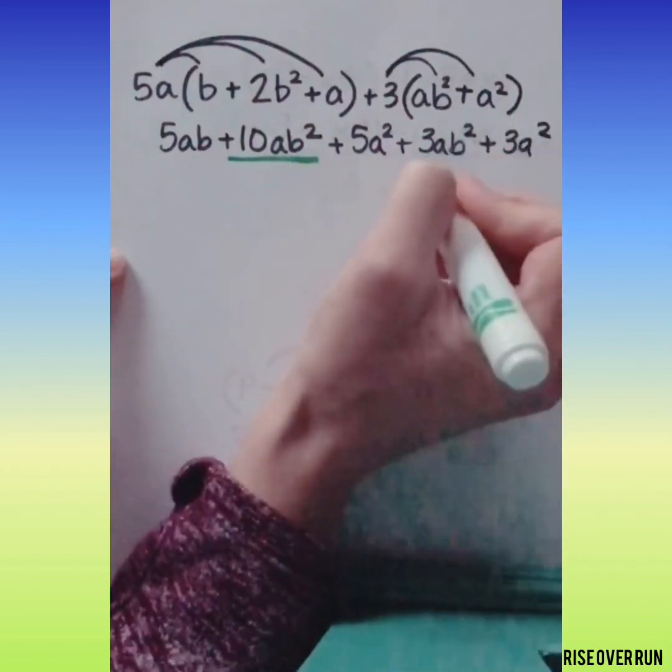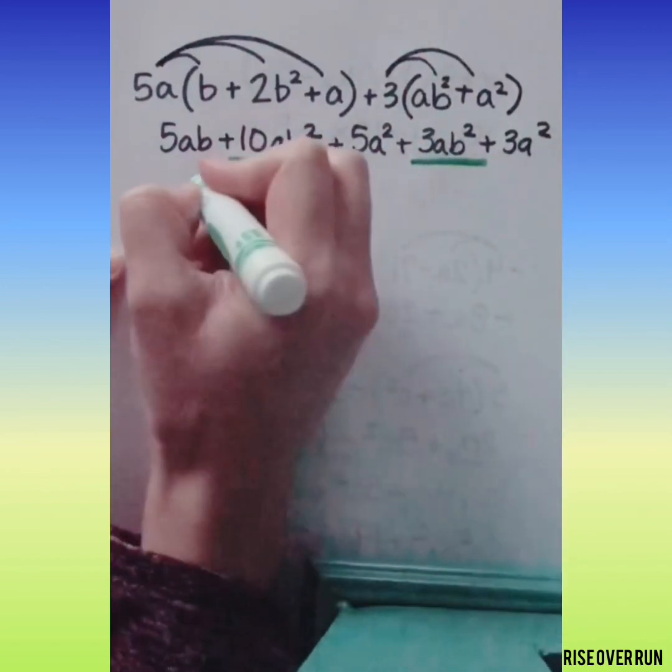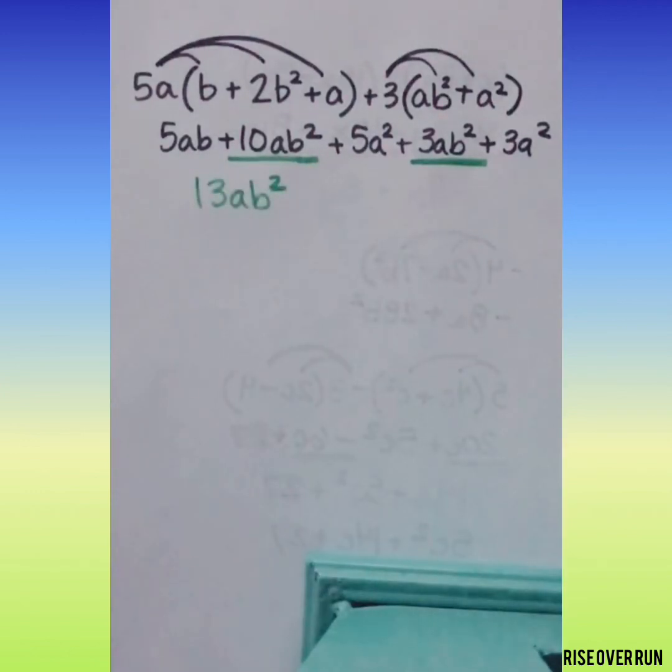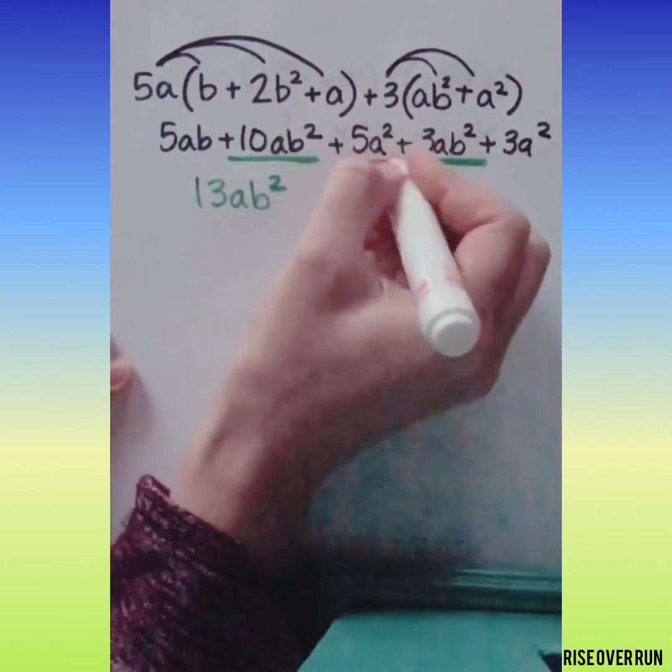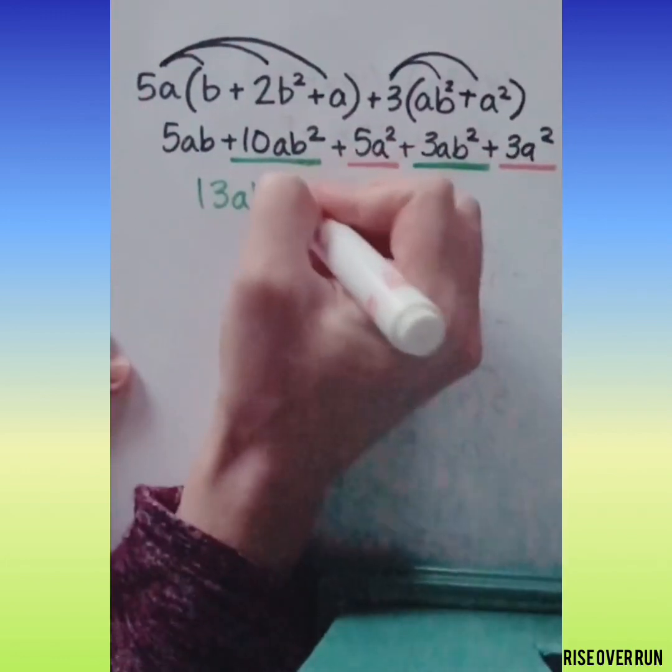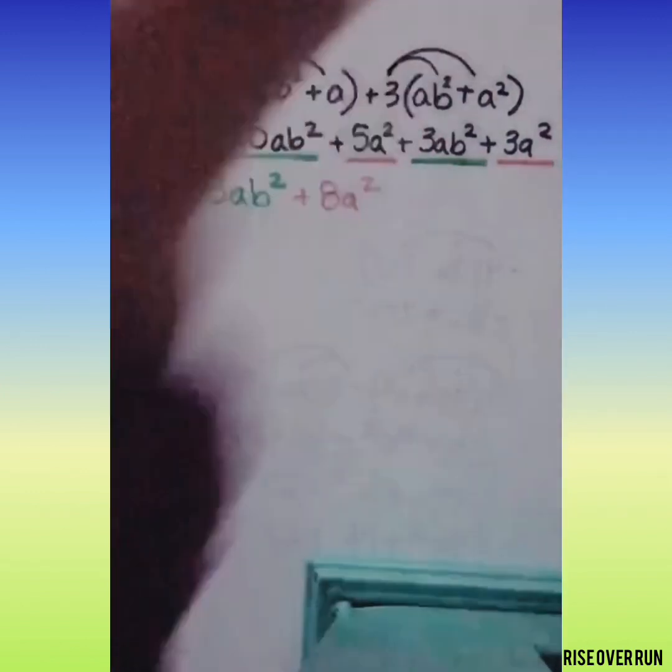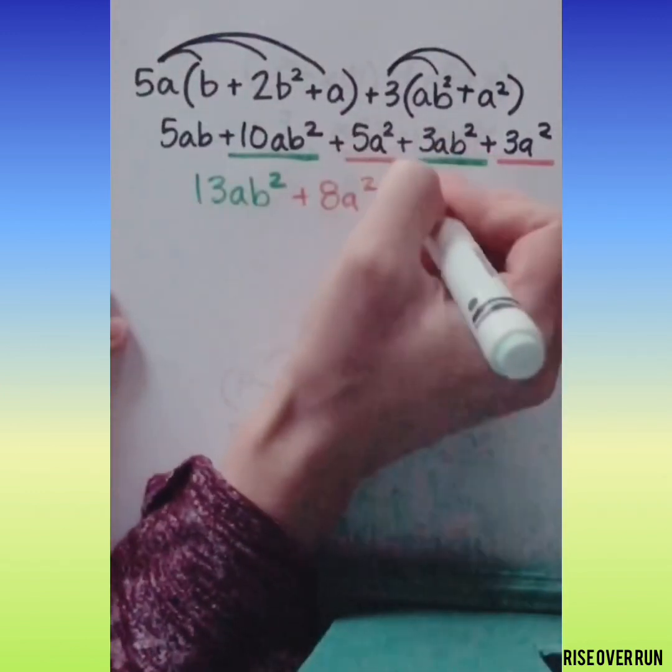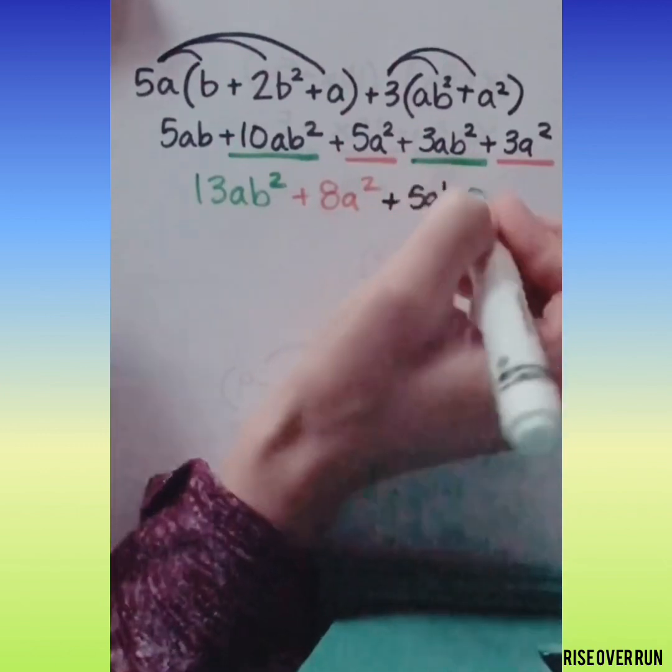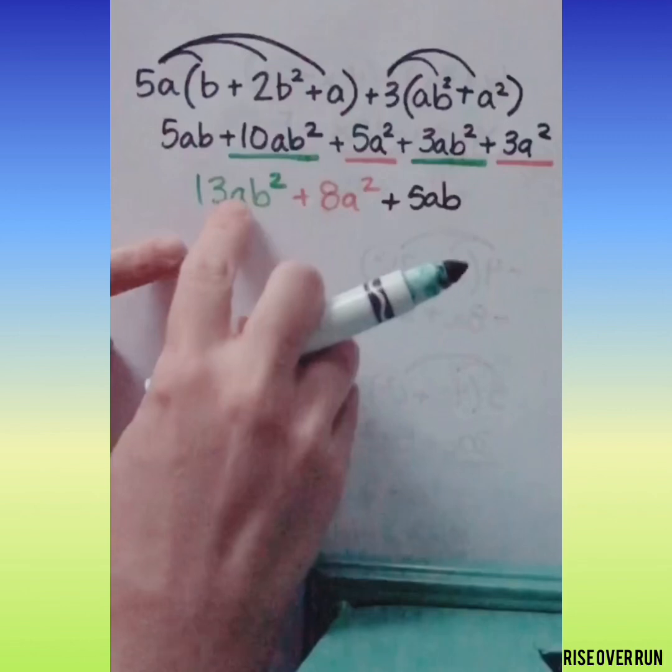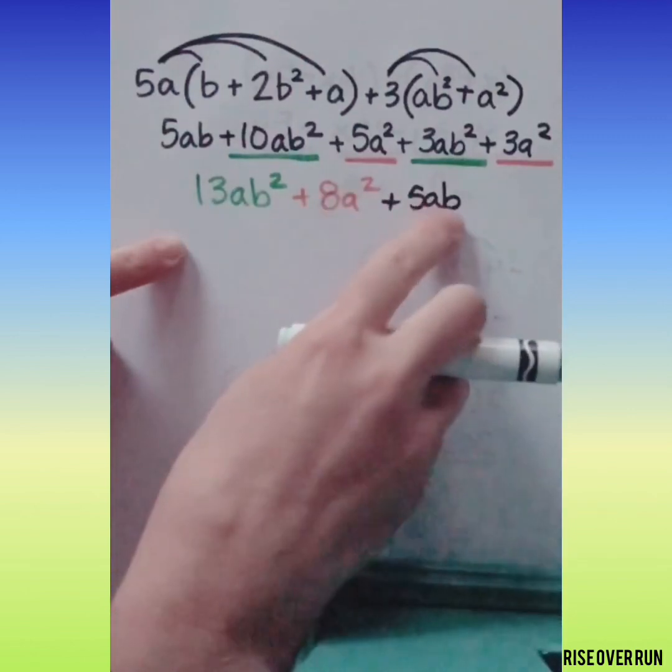10ab squared and 3ab squared combine to make 13ab squared. Then we have 5a squared and 3a squared to make 8a squared and finally we have 5ab.